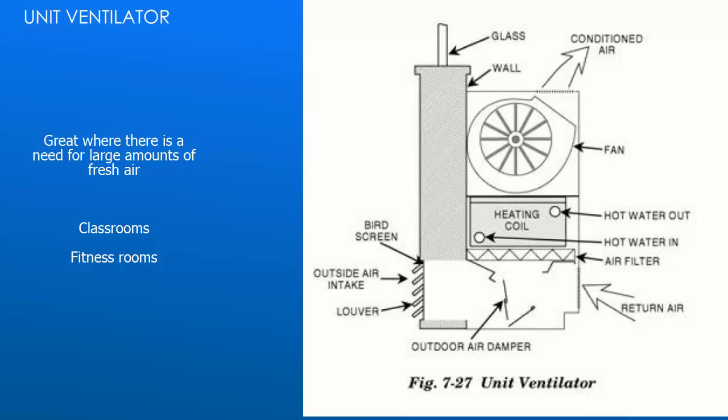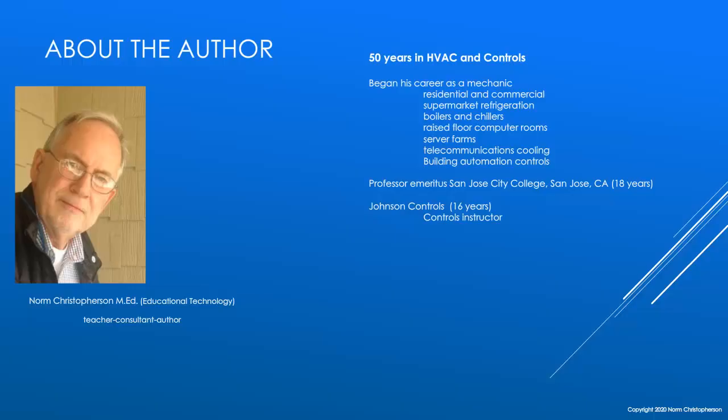There is a variety of control strategies that may be applied to control this type of system depending upon the usage of the room. The primary application for a unit ventilator is to provide lots of fresh air. A popular application would be an elementary school classroom where maybe 25 students and the teacher are all located in a small classroom and the students have just returned from recess. We would want plenty of ventilation in that room, wouldn't we?